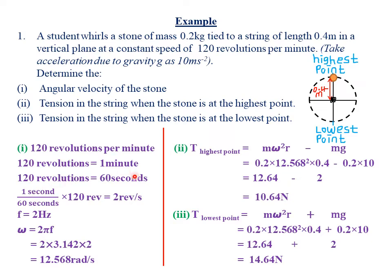If 120 revolutions are made in 60 seconds, in one second we have 1/60 × 120 = 2 revolutions per second, which is 2 hertz. Therefore, the angular velocity is given by ω = 2πf = 2 × 3.142 × 2 = 12.568 radians per second.